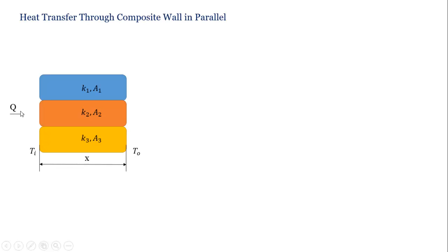Q is flowing through this wall. It is distributed in three parts that will be Q1, Q2, and Q3.